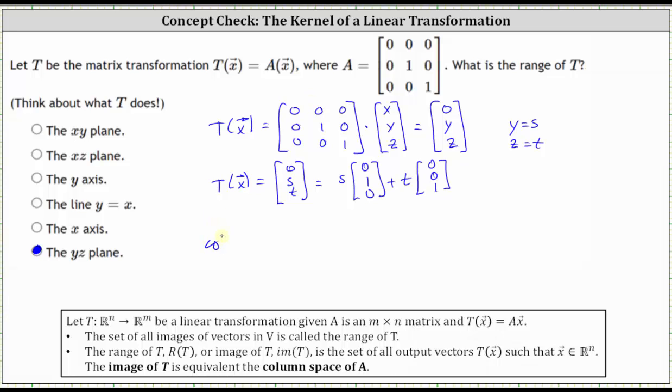So we can also state the column space of matrix A, which is equal to the image of T, which is equal to the range of T, is equal to the span of the set containing the vectors (0, 1, 0) and (0, 0, 1).